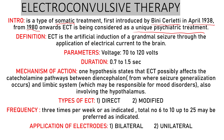ECT is the artificial induction of grand mal seizure through the application of electrical current to the brain. We place electrodes and give electrical current to the patient to induce a seizure. The parameters to remember are: voltage is 70 to 120 volts, and duration is 0.7 to 1.5 seconds.